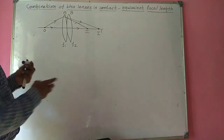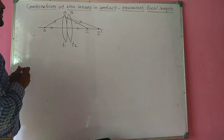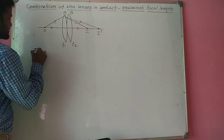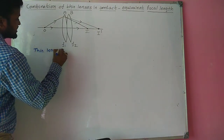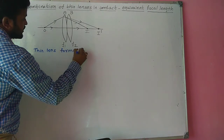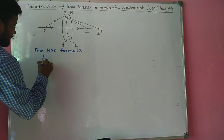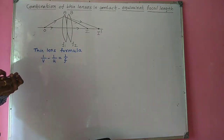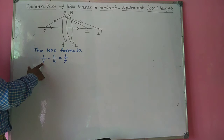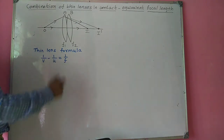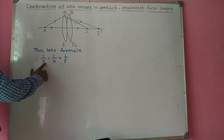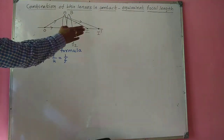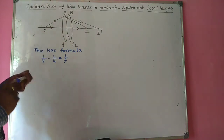To obtain the equivalent focal length of this combination, let us take the thin lens formula: 1/V minus 1/U equals 1/F, where V is image distance, U is object distance, and F is focal length. Let us apply this thin lens formula for both lenses A and B individually.